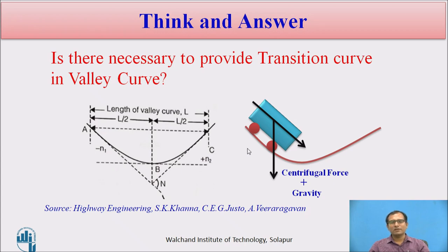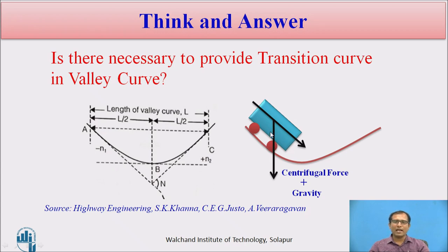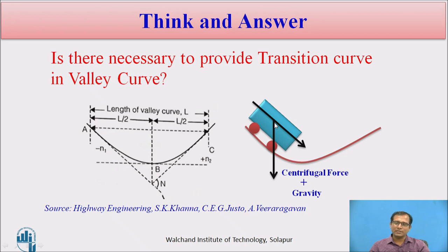The requirement of a transition curve in the valley curve is necessary. The reason is that the centrifugal force along with gravity acts in the downward direction when a vehicle is moving at higher speed in the valley curve. This causes additional pressure on the wheels, tires, and the suspension system. So when centrifugal acceleration exists, we need to introduce it gradually using a transition curve; otherwise, it causes discomfort, sudden jerk, and safety hazards for passengers and driver.